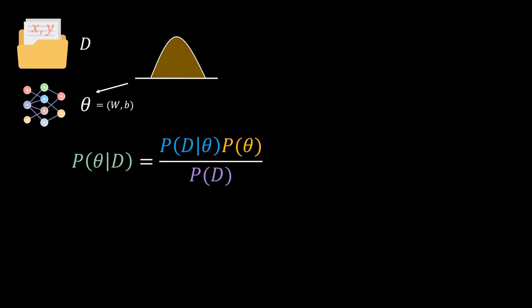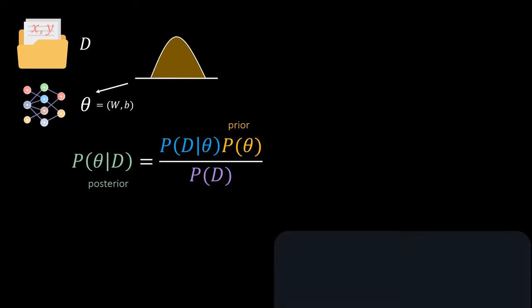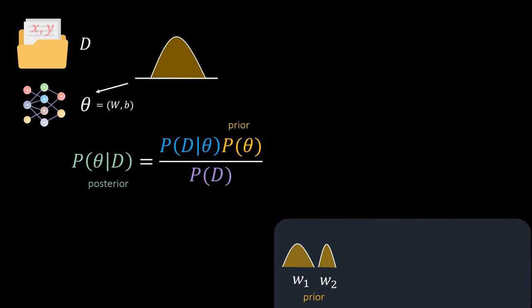Bayes' rule helps us to calculate the posterior so the distribution after observing data. So we update our initial best guess the prior each time we observe data from our training data set. A simple example could be that we assume these prior distributions on the weights and then feed in the first data point from our ice cream data set. After observing the true label we update the weight distributions so that they better match the prediction.